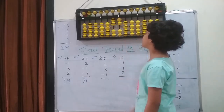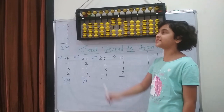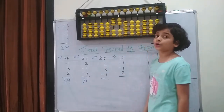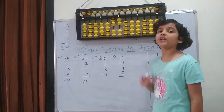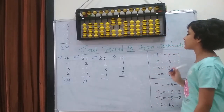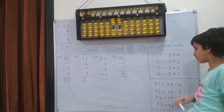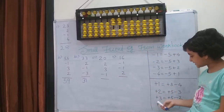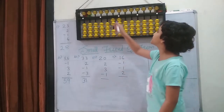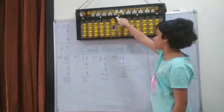Then I am going to add 3. I cannot because I do not have enough beads. I have to check if the upper bead is available or not. This time it is available for addition, means I can use the small friend formula. This is addition. So I can do the addition formula, which is plus 3 equals to plus 5 minus 2. Plus 5 and minus 2: 1 and 2.